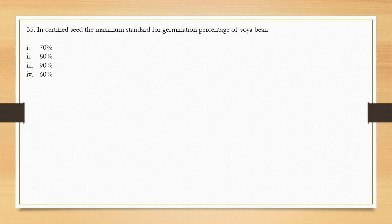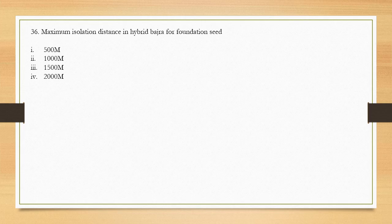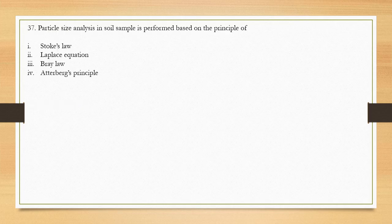Question number 35: The maximum standard for germination percentage of soybean for certified seeds. The options are 70%, 80%, 90%, and 60%. Question number 36: Maximum isolation distance in hybrid bajra for foundation seed — options are 500 m, 1000 m, 1500 m, and 2000 m. The correct answer is option 2, 1000 m.